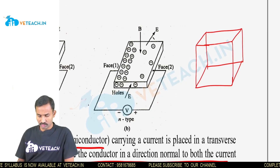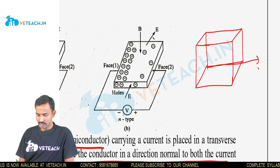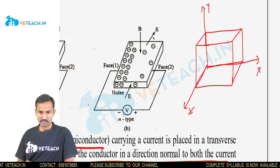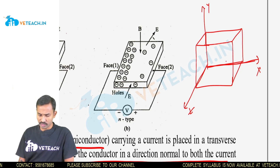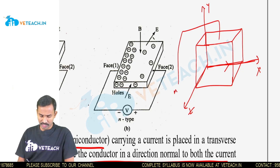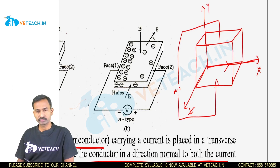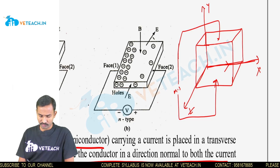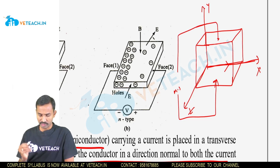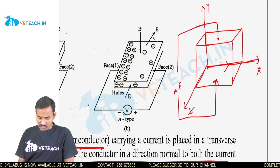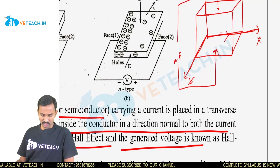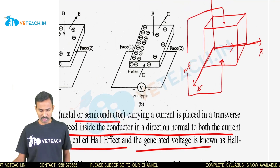Consider three mutually perpendicular directions: x, y, and z. The current passes in the direction of x. You apply a magnetic field in the direction of y. In the perpendicular z-axis direction, an electric field or EMF is produced.